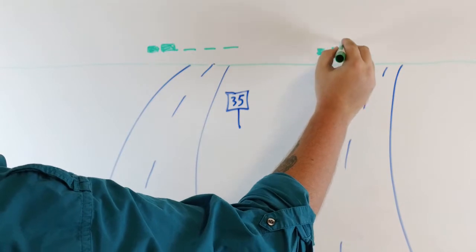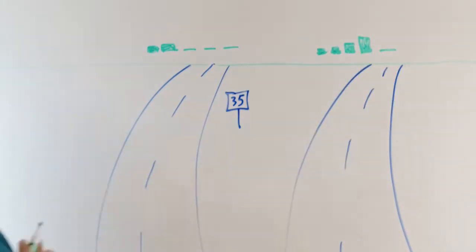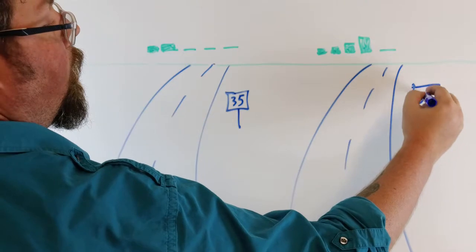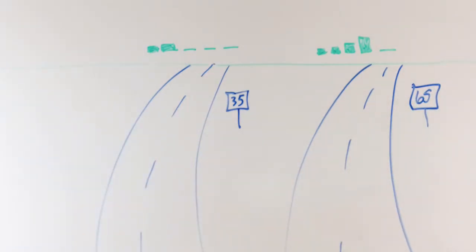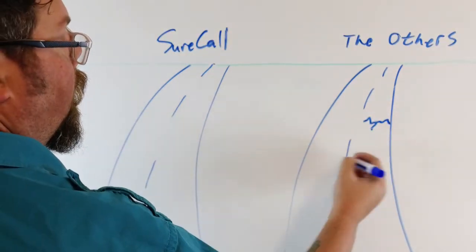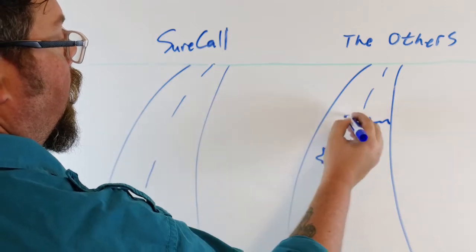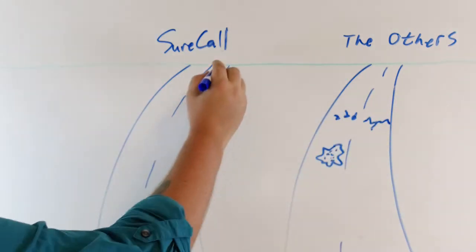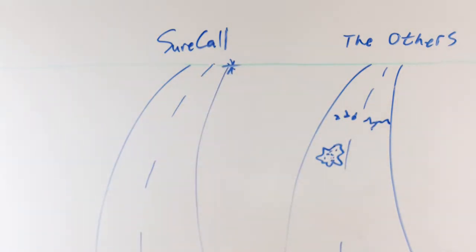If you think of the signal booster as a highway with lanes going two ways, the outside signal strength is like the speed limit on that highway. If the signal strength is the speed allowed on the highway, the signal booster is the number of lanes on the highway as well as the smoothness of the road.